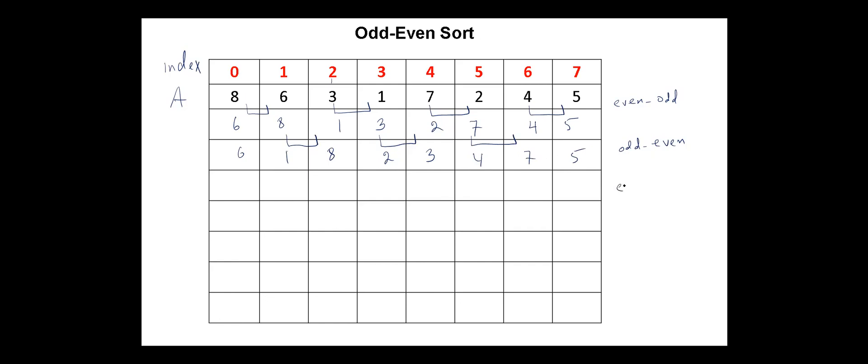Next we start again with even-odd pair. Six and one, we have to swap them. Eight and two, we have to swap them. Three, four. They are in their places. Seven, five. We have to swap them.